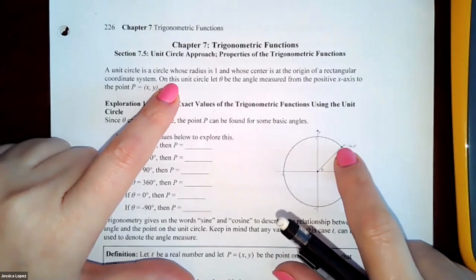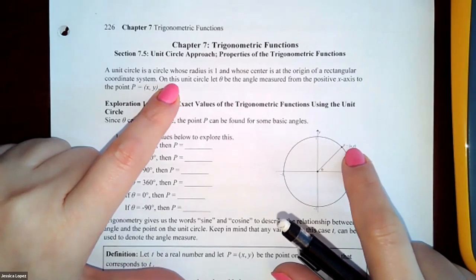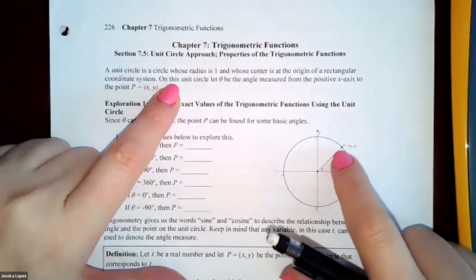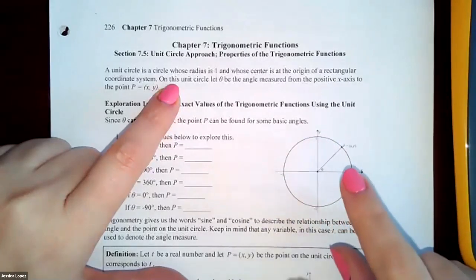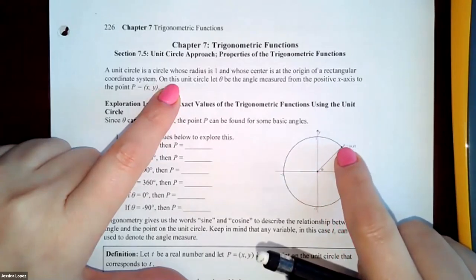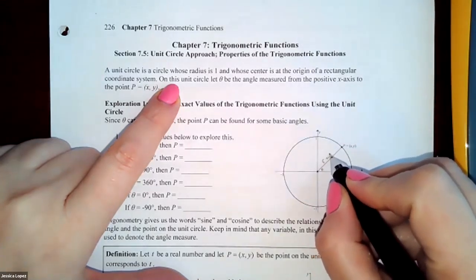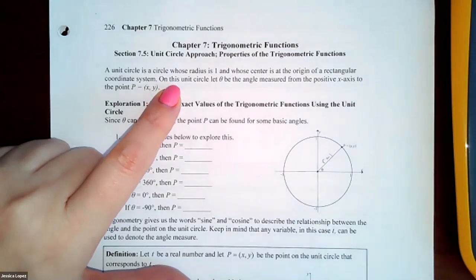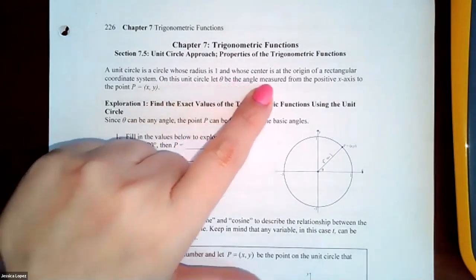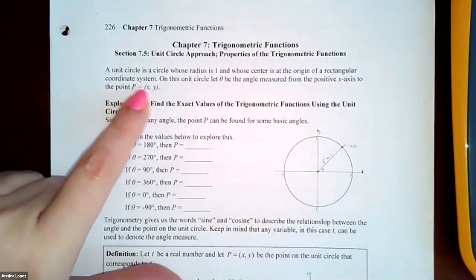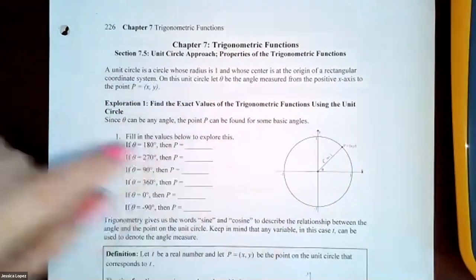The point where the terminal side intersects the unit circle is the (x, y) point they're talking about, and the angle from the x-axis to that terminal side is the angle theta. We know this measurement because the radius is 1 — from the center out to the edge of the circle, that measurement is 1. On this unit circle, let theta be an angle measured from the positive x-axis to point P. You're basically tracing along until you get to that point.